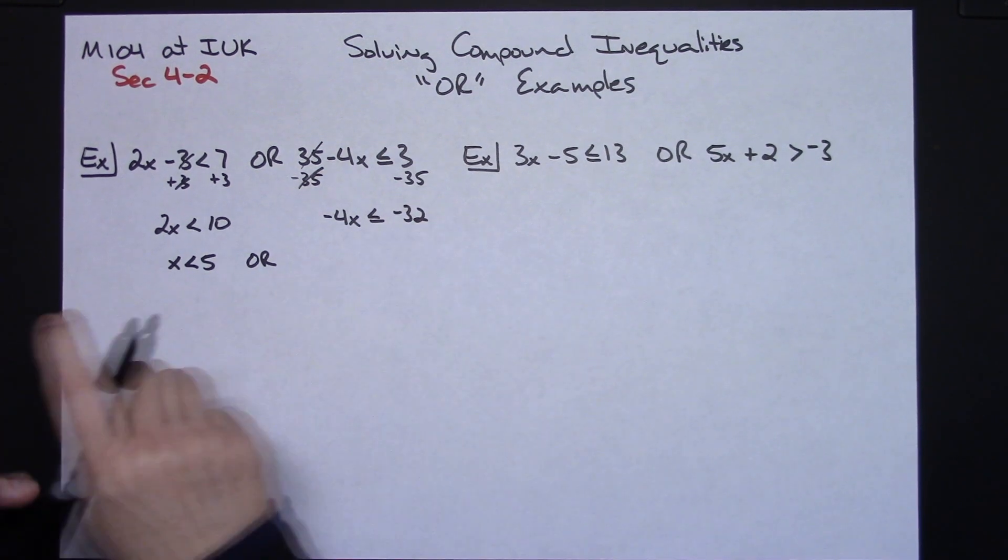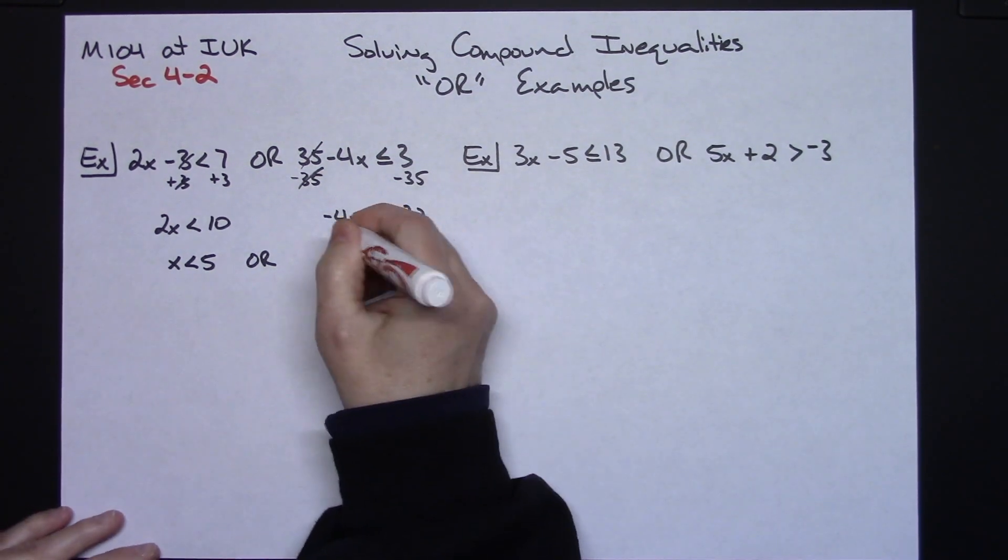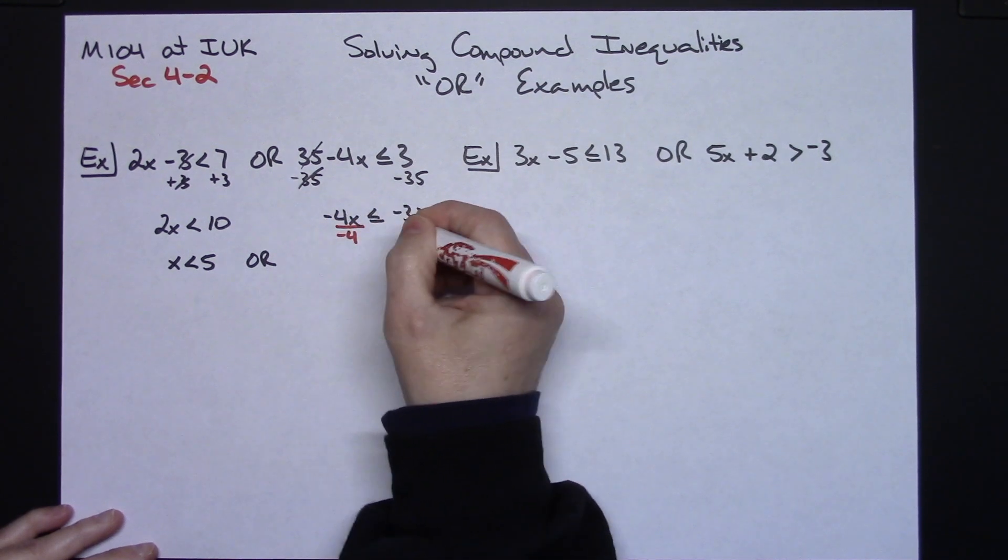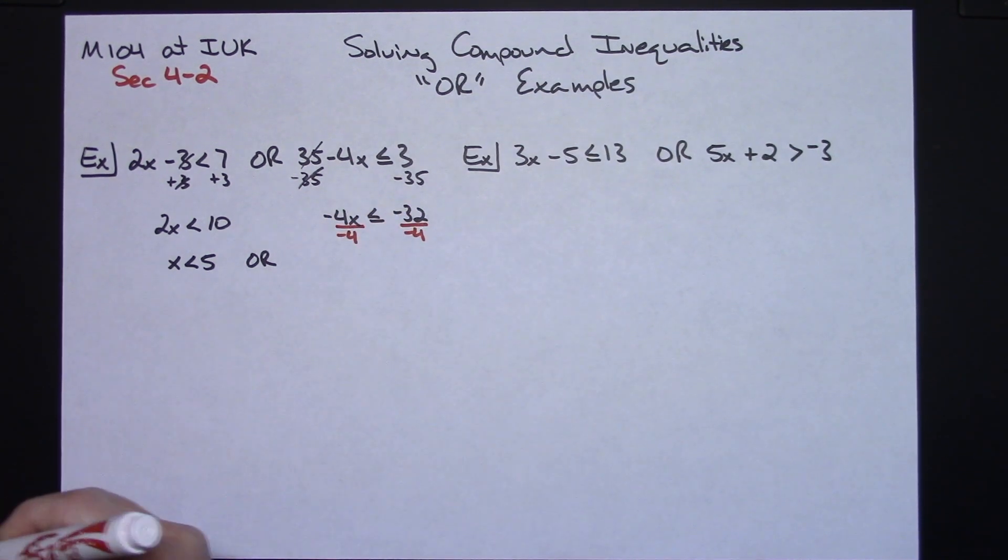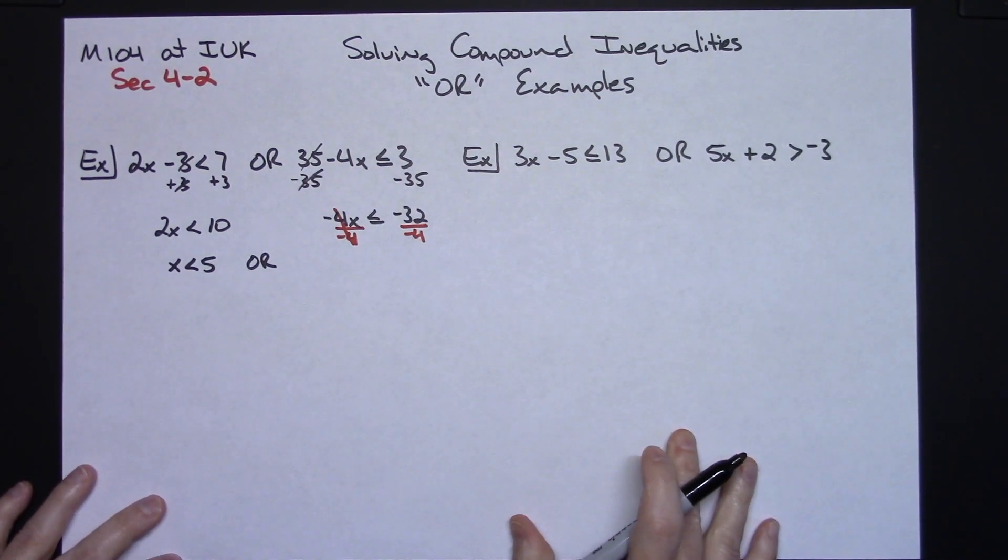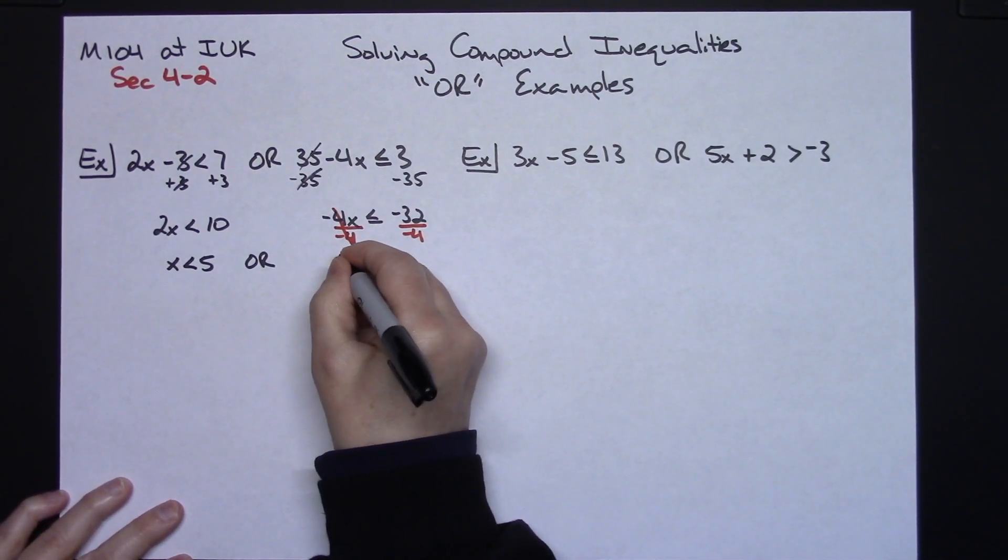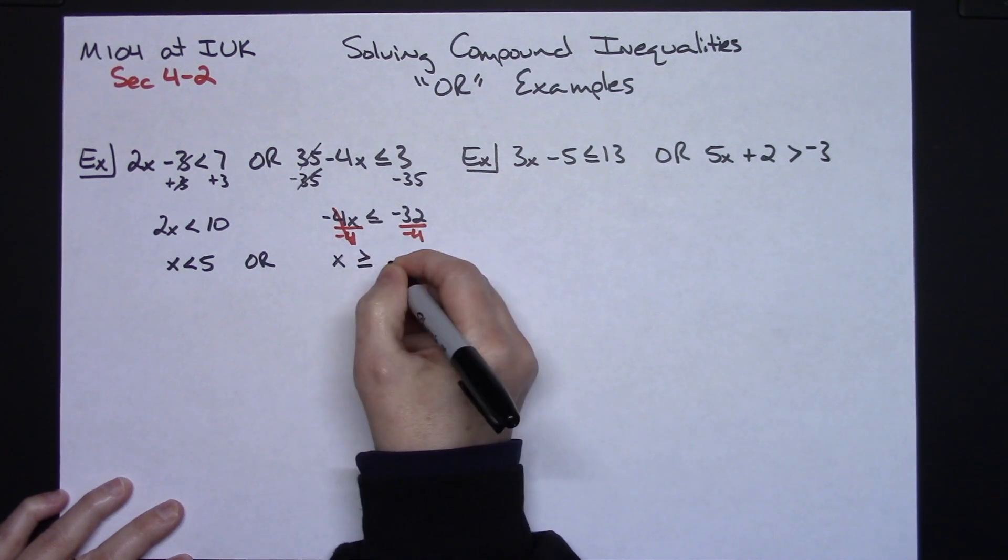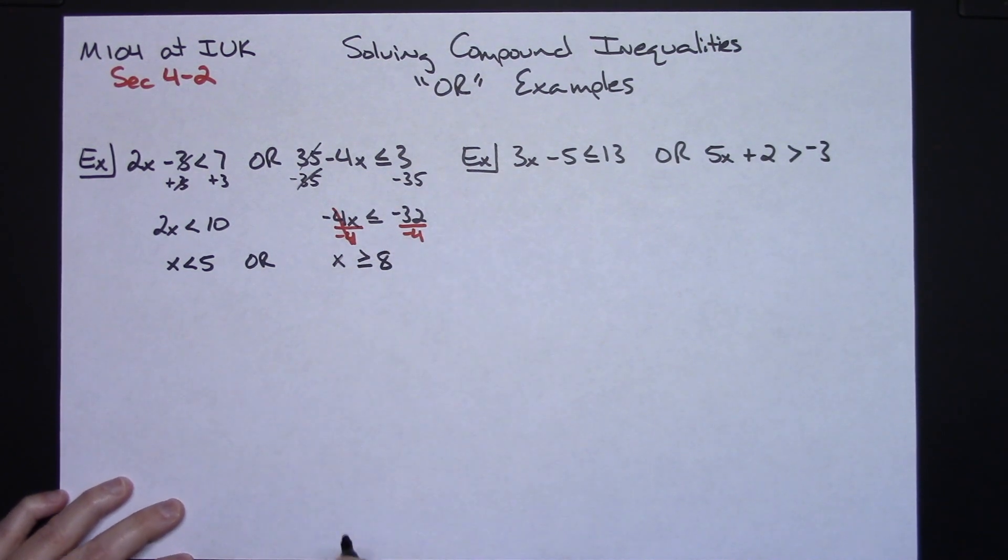Dividing here by that negative 4, you've got to remember your rules for multiplying and dividing by negatives with your inequalities. Whenever you multiply or divide by a negative number, you've got to remember to switch that inequality sign around. So this will be x is greater than or equal to a positive 8.